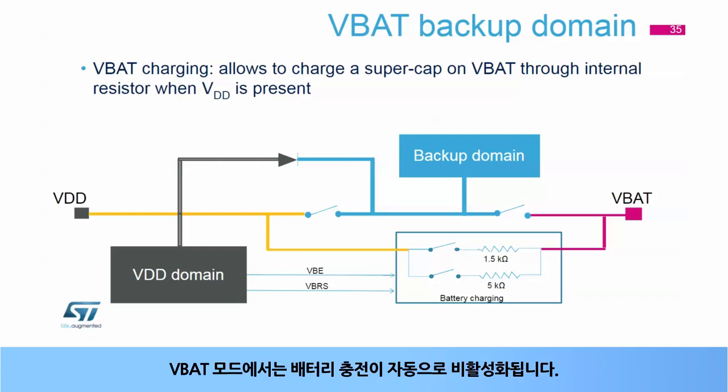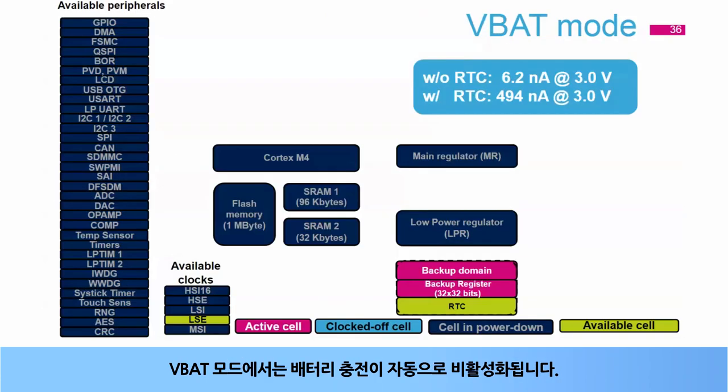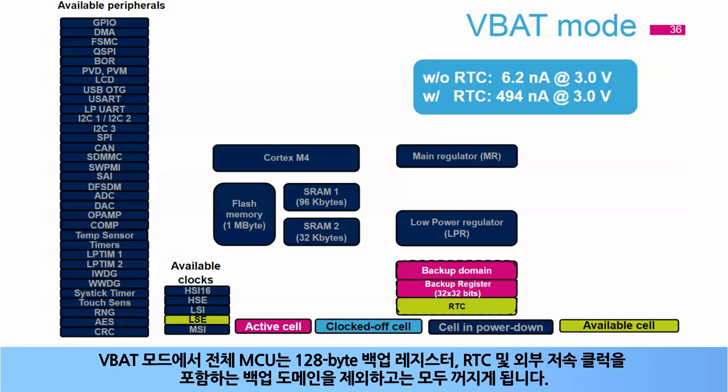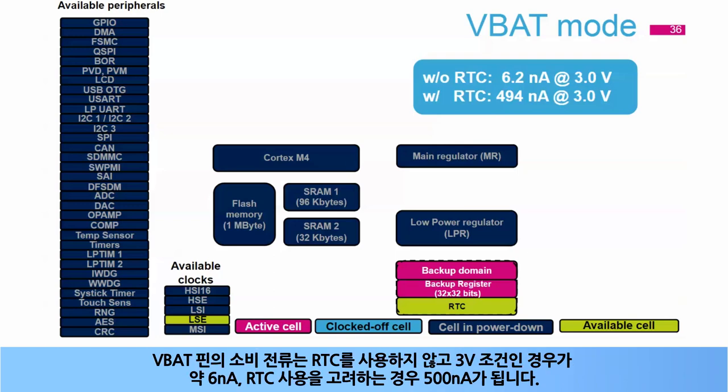Battery charging is automatically disabled in VBAT mode. In VBAT mode, the entire MCU is in power-down mode except the backup domain, including the 128-byte backup registers, RTC, and external low-speed clock. The consumption from the VBAT pin is approximately 6 nanoamps without the RTC at 3 volts, and 500 nanoamps with the RTC.